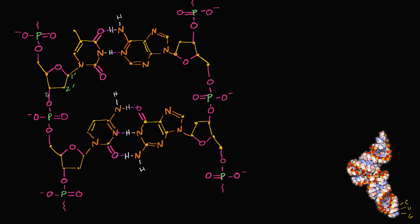This is one prime, two prime, three prime, four prime, five prime. We can see on the two-prime carbon, we don't have an oxygen attached to it. We don't have a hydroxyl group attached to it. And because of that, we know that this is not ribose, this is deoxyribose. And these two are also deoxyribose.